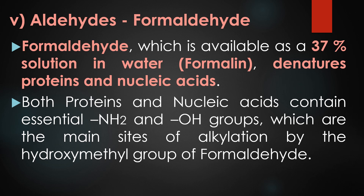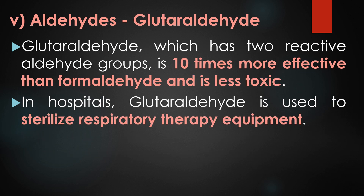Proteins and nucleic acids contain essential NH2 and OH groups, which are the main sites of alkylation by the hydroxymethyl group of formaldehyde. Glutaraldehyde, which has two reactive aldehyde groups, is 10 times more effective than formaldehyde and is less toxic. In hospitals, glutaraldehyde is used to sterilize respiratory therapy equipment.